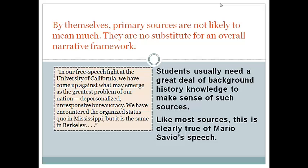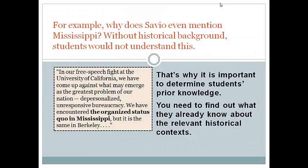Let's see how this applies to Savio's speech. For example, why does Savio mention Mississippi as he does here? Big events took place in Mississippi in the summer before Mario Savio gave his speech at Berkeley. Students need to know about those events if they are to appreciate what Savio means when he refers to the organized status quo in Mississippi.